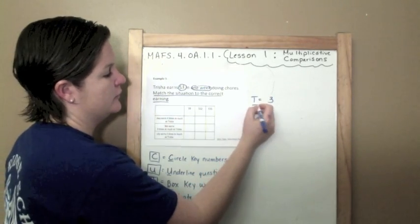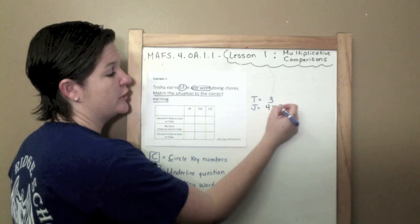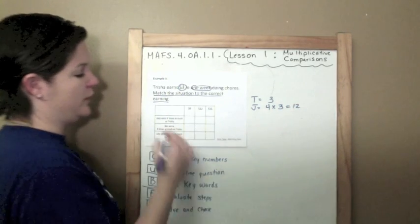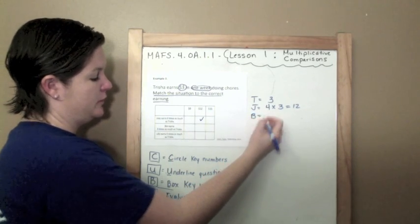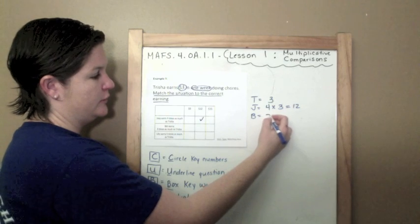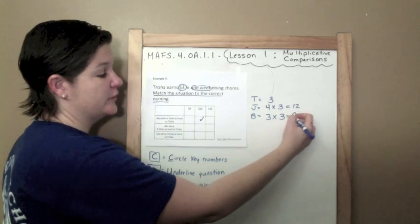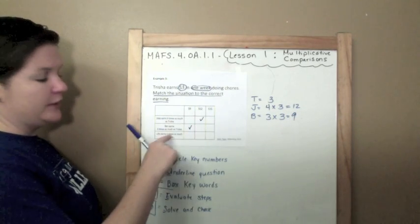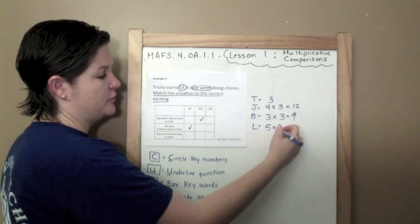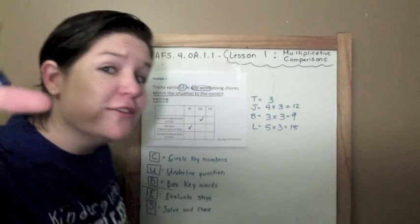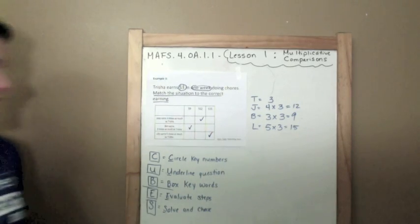So Trisha earns three dollars in one week. I'm going to put T equals three dollars. Joey earns four times as much as Trisha. So Joey earns four times what Trisha earns, which is three dollars, so he has 12. Put a check mark in the 12 box. Ben earns three times as much as Trisha. Three times as much as Trisha, which is three, that would be nine dollars. Lily earns five times as much as Trisha. Five times three is 15. Fifteen dollars.